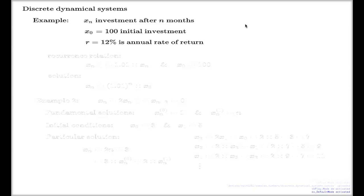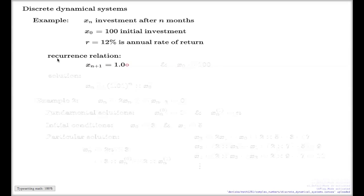It's a very simple dynamical system — we all know how to solve that; you don't even need complex numbers. Every person in Australia who has money in a bank account knows how to solve this dynamical system. You observe the recurrence relation governing the system: the amount in month n+1 is 1.01 times the amount in month n, together with the initial condition. The solution comes immediately — it's a geometric progression.